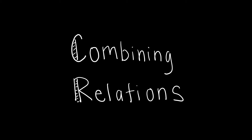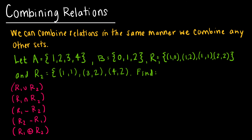Let's take a look at how we can combine relations. We already know a little bit about how to combine sets, so we're really just going to use that in a relation as well. So if A is {1, 2, 3, 4} and B is {0, 1, 2}, and we have two relations R1 and R2, we're trying to find the union, the intersection, R1 minus R2, R2 minus R1, and the XOR.